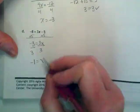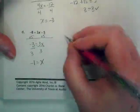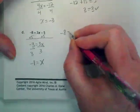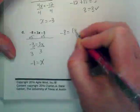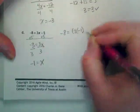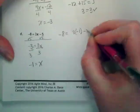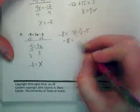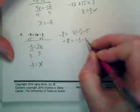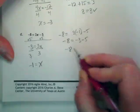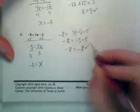And real quick, negative 8 is equal to 3 times negative 1. I don't know why I put a parenthesis there, minus 5. And I get negative 8 is equal to negative 3 minus 5. Negative 8 is equal to negative 8, and it checks.